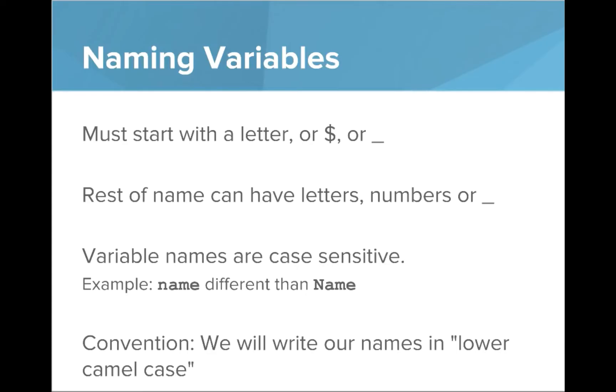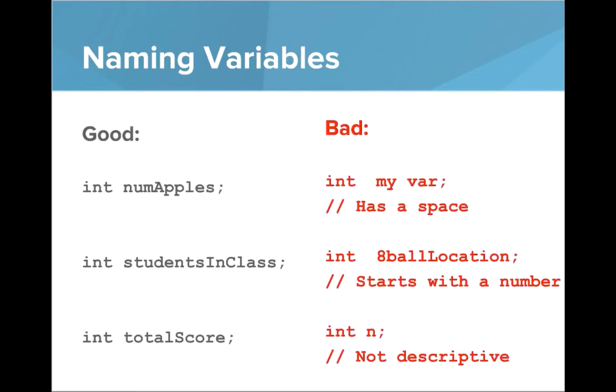In this course we'll write all of our names in lower camel case, where we start with a lowercase letter and then every word afterwards has an uppercase letter. To show you a few examples of that, on the left we have some good examples: int numApples with a capital A, int studentsInClass, int totalScore.